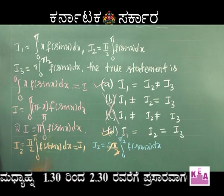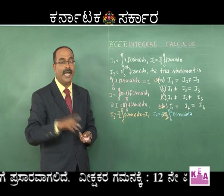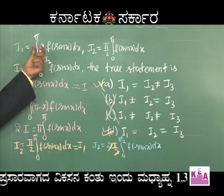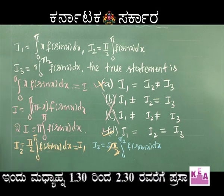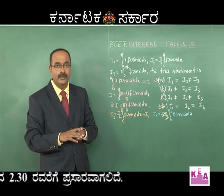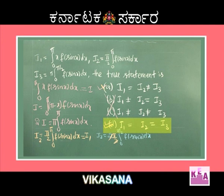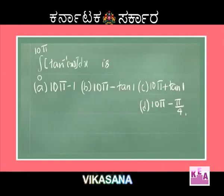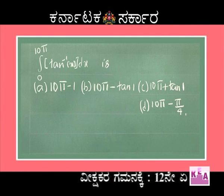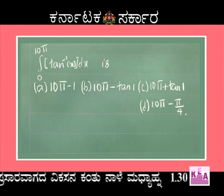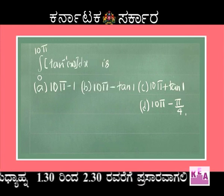Therefore i1 = i2 = i3, so option d is correct. This is a very important problem for your CET exam, as these three equivalent forms of integrals are frequently used. The next problem is: ∫₀^(10π) ⌊tan⁻¹x⌋ dx, with options (a) 10π-1, (b) 10π-tan1, (c) 10π+tan1, (d) 10π-π/4.